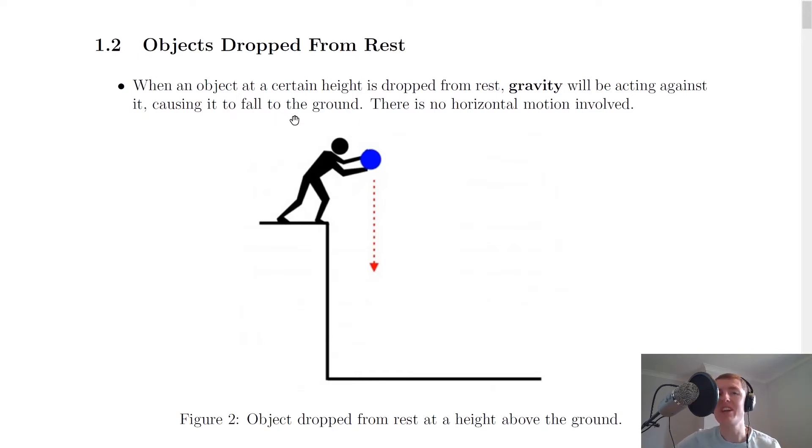So it says here that when an object at a certain height is dropped from rest, gravity will be acting against it, causing it to fall to the ground. There's no horizontal motion involved. So it's simply vertical motion and it's common sense that gravity will be acting on the object.